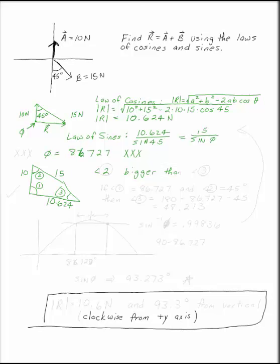So if phi were 86.727 degrees, then the other angle would be smaller. We know that angle 2 is opposite a bigger side than angle 3. Angle 2 has to be bigger than angle 3.